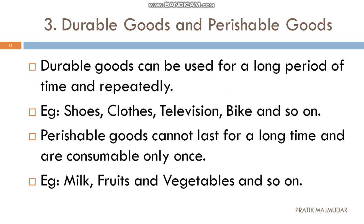If you have purchased branded clothes from a store, you use those clothes multiple times. If you have purchased a bike, you will use it for multiple times — not a single time. So those goods will be known as durable goods, as you are using them repetitively.